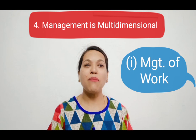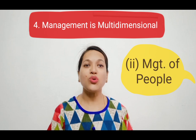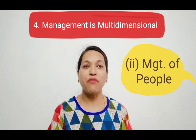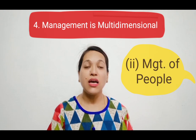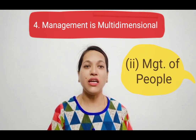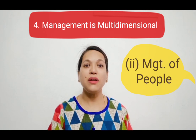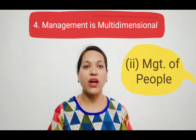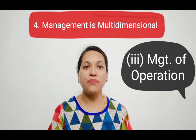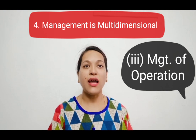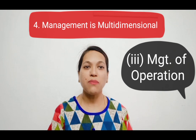The second dimension is management of people — it means who is to do it. Human resource is one of the main assets of an organization. Management has to get the work done from employees. These employees may have different types of needs like hiking salary, promotion or job security. Management has to reconcile individual needs with organizational goals. The third dimension is management of operations — it means how to do it. Every organization uses a production process to convert raw material into finished goods.